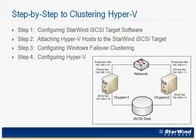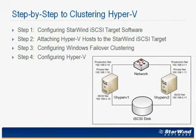The goal is to create as much high availability as possible in your architecture. The step-by-step process for creating clustered Hyper-V involves four steps. If you've deployed Hyper-V today, using failover clustering to ensure that the loss of a single host doesn't mean the loss of all virtual machines is a strong goal. Step one is configuring the Starwind iSCSI target software, which is a relatively easy process — I'll show you the exact steps you'll need to go through.